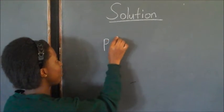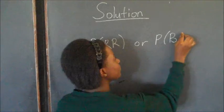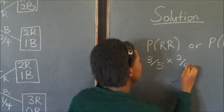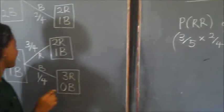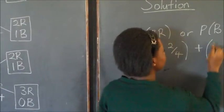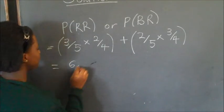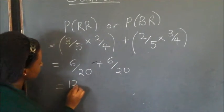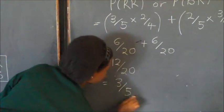So we get the probability of RR or the probability of BR. The probability of RR would be three out of five times two out of four. Then BR will be two out of five times three out of four. So that's six out of twenty plus six out of twenty, which gives us twelve out of twenty. We can reduce this by four, which gives us three out of five, which is our answer.